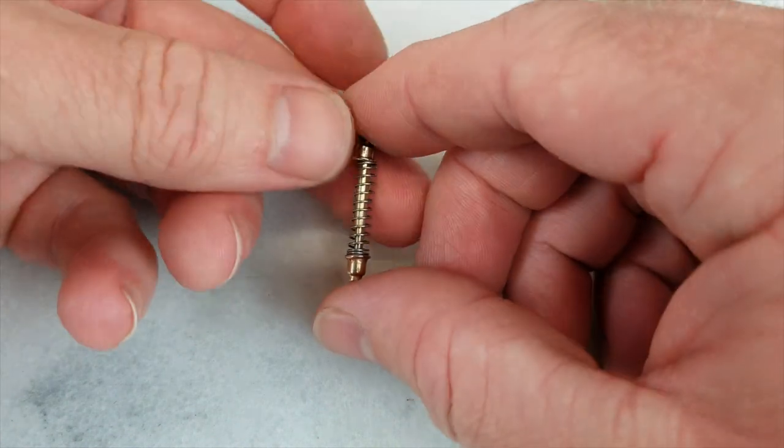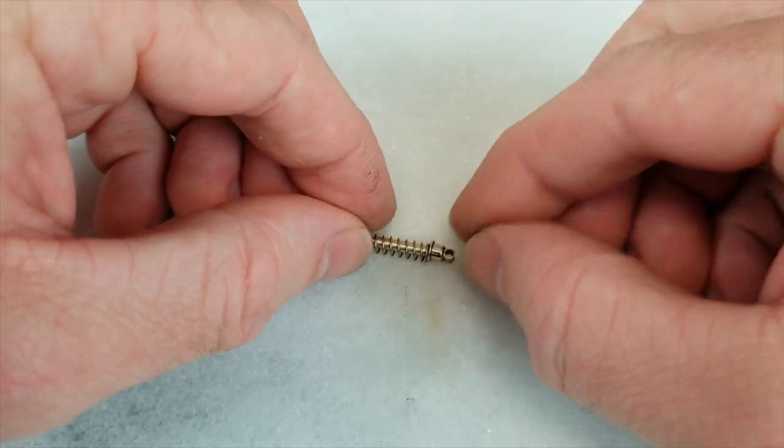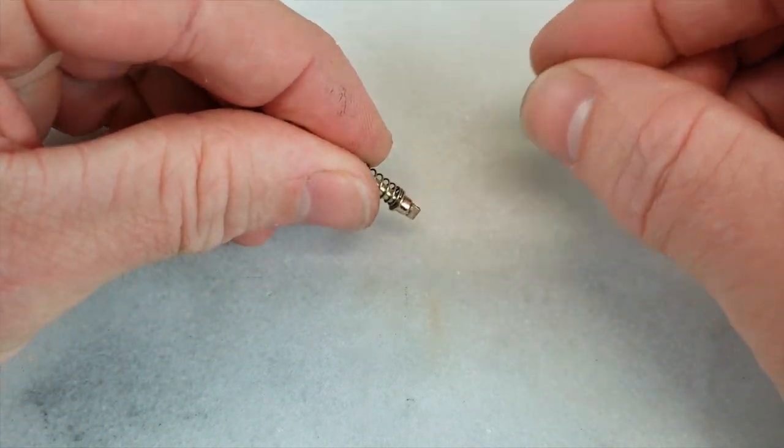Once you are happy with it, center up the spring and apply a dab of CA glue to the spring and the shock top. Once set, repeat for the other side.